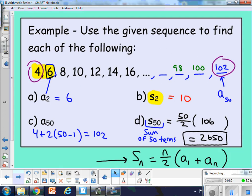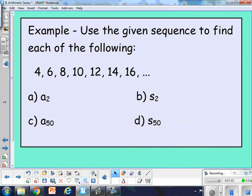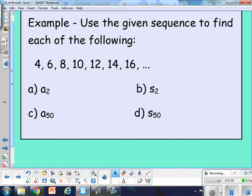So first off, here's an example. We give a given sequence. Let's find each of the following. So the sequence we can see is 4, 6, 8, and it appears to be a common pattern of adding 2 each time. So that does make it an arithmetic sequence with a common difference of 2.